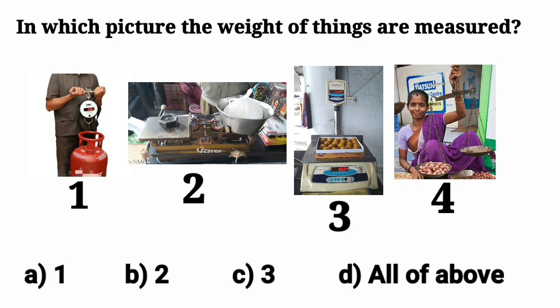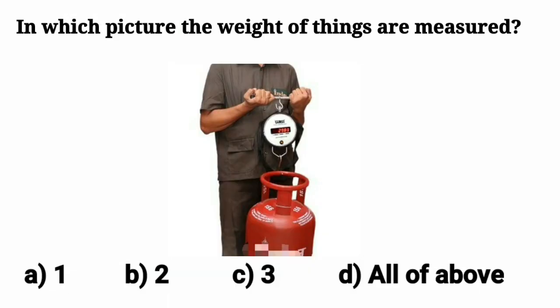Our first question is in which picture the weight of things are measured. Here we have 4 pictures. In first picture, a man is weighing a gas cylinder. Yes, he is using a weighing machine.